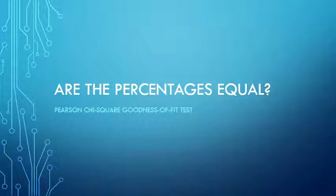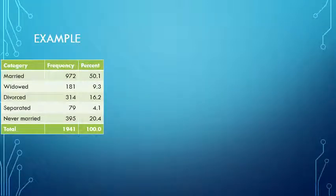The best way to explain this test is by using an example. I have a few categories of marital status ranging from married to never married, and a number of people that have actually selected those options, and next to that the percentages.